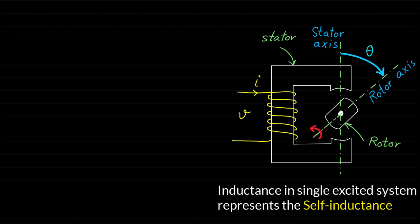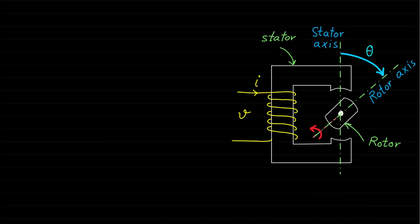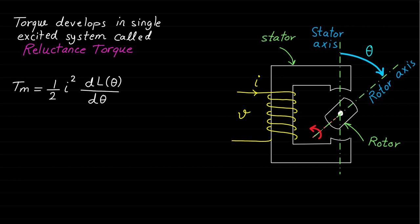Note that the inductance in a single excited system represents the self-inductance because we have only one coil — there is no mutual inductance. We know from previous lectures that the self-inductance consists of leakage inductance and magnetizing inductance. The leakage inductance is ignored here, so the self-inductance equals the magnetizing inductance only. The torque generated due to self-inductance variation is called reluctance torque. This type of torque establishes the foundation of the reluctance machine, which is considered one of the important electrical machines in industry. We will cover this type of machine in future lectures.